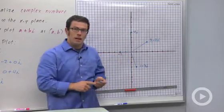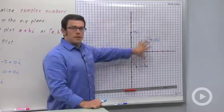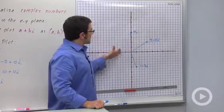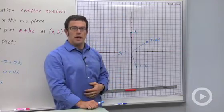That's it. That's how we plot complex numbers. We call this the complex plane. Again, the horizontal axis is the real axis. The vertical axis is the imaginary axis.